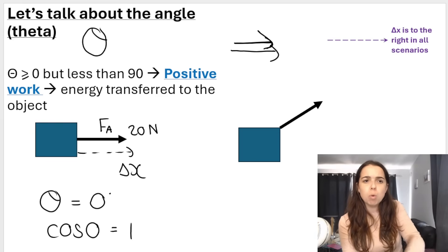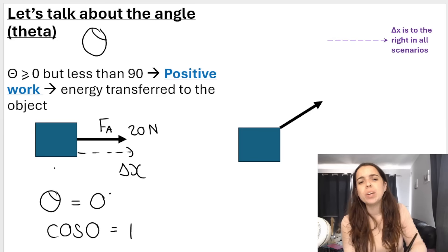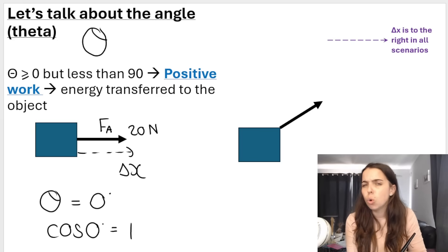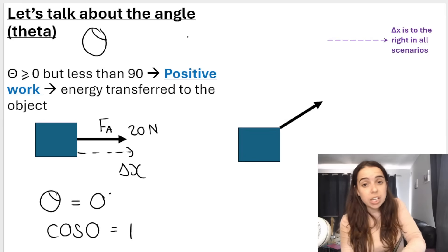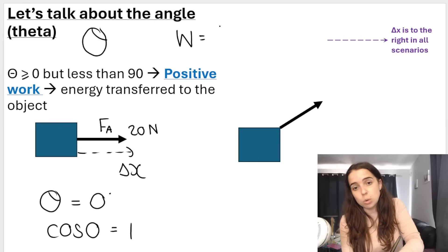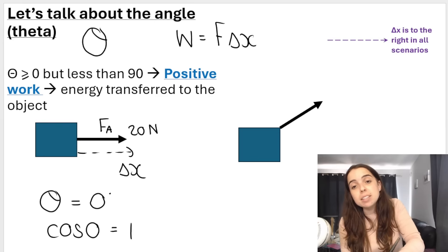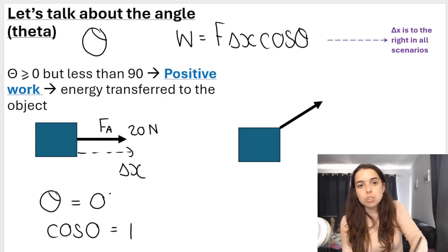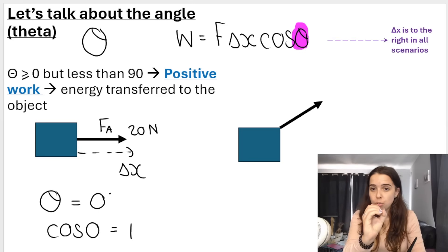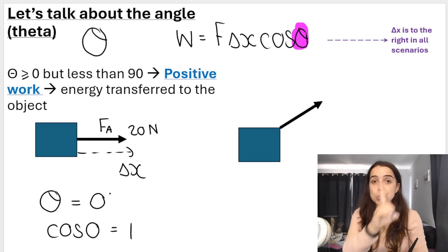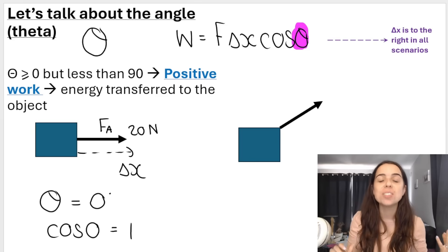You might be wondering why we use cos of theta. Remember, to calculate work we use: Work = Force × displacement × cos θ. So if the angle is zero, then cos of zero equals one, which gives a positive answer for work.